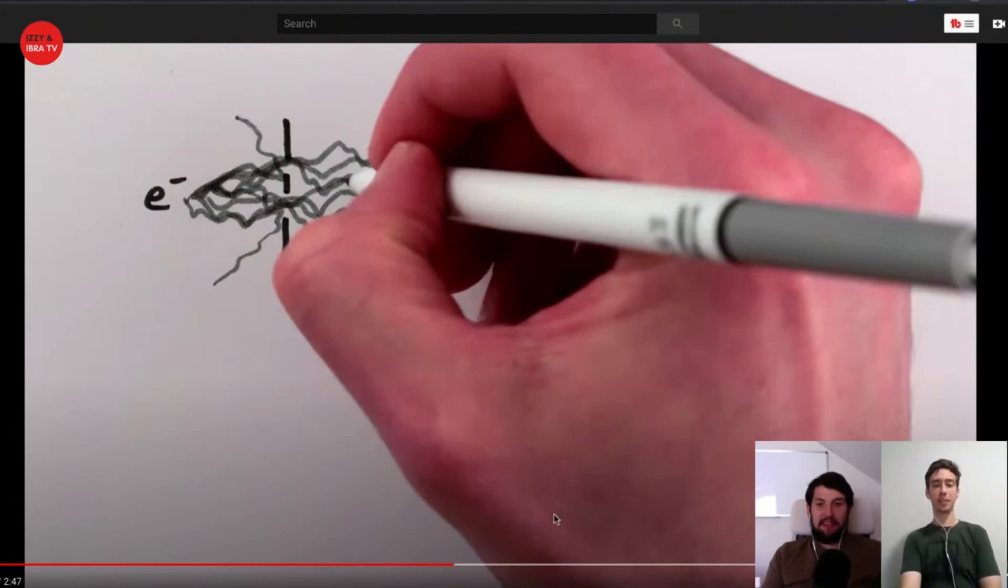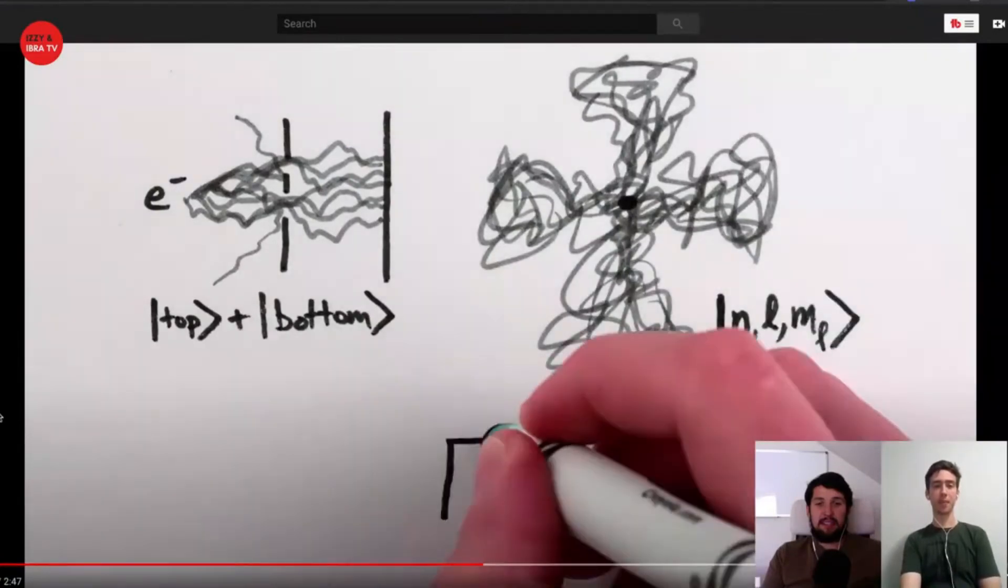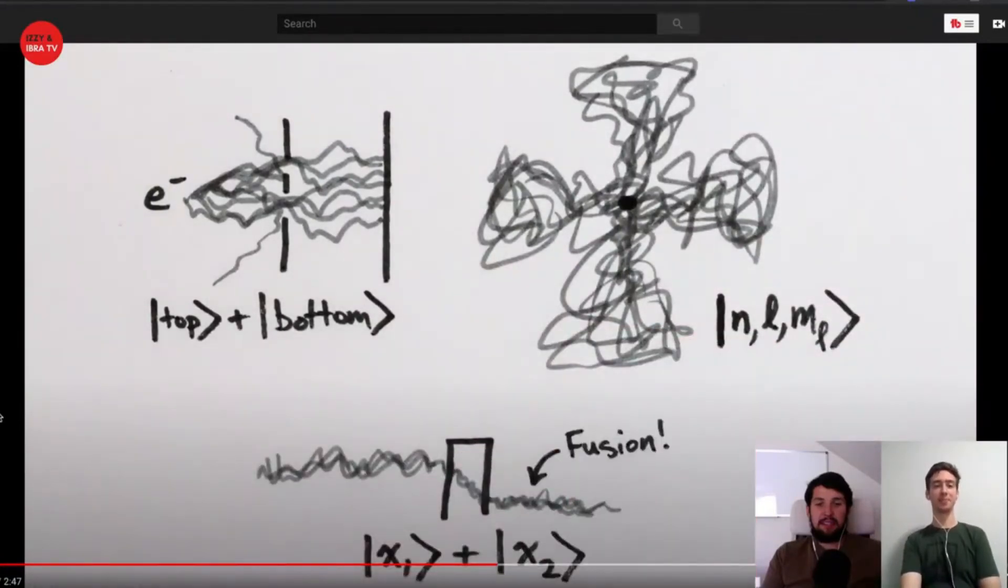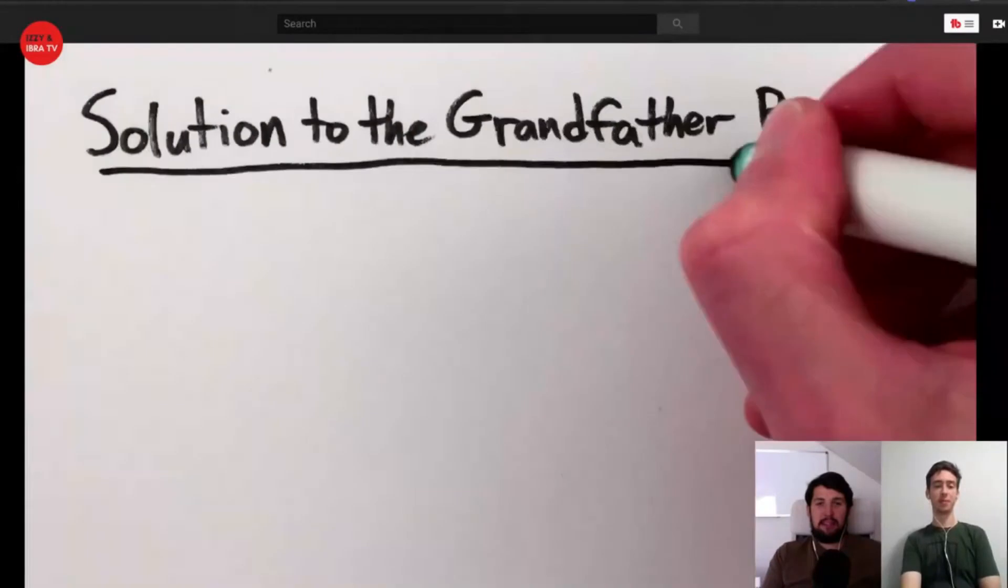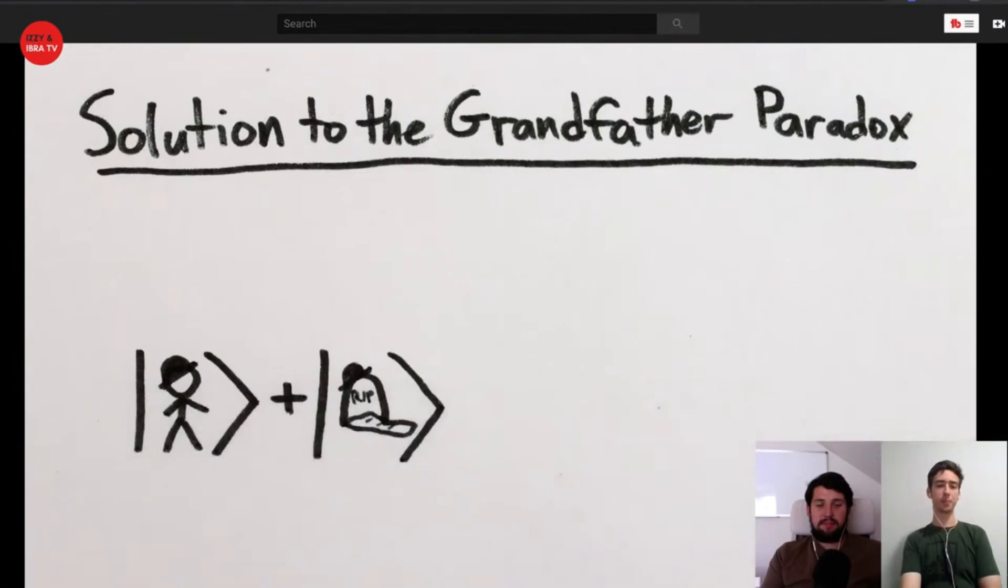For the weirdness of the double slit experiment, many properties of atoms and molecules, fusion in the sun's core, and so on. So if the universe were to exist in a superposition of two states—your grandfather is alive and your grandfather is dead—the natural result is a superposition of two states: you're born and able to go back in time to kill your grandfather, and you're not born.